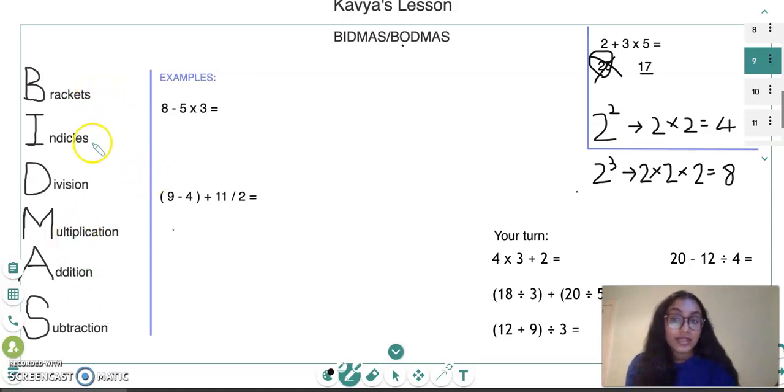What this actually means is that brackets always comes before indices, and indices come before all of these as well. Something to make note of is that division and multiplication have the same sort of authority. Just because in BIDMAS the D comes before the M, it doesn't mean we have to do the D before the M.